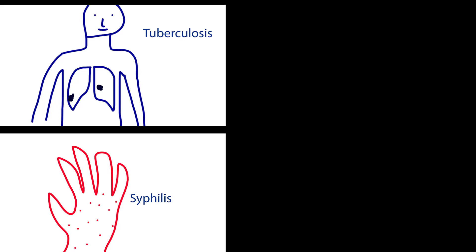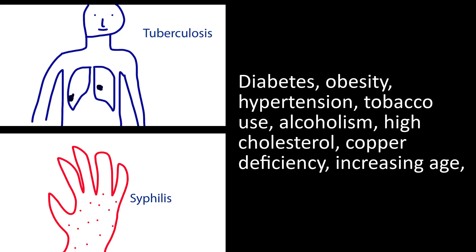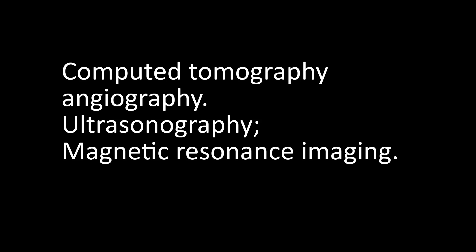Renal aneurysm symptoms include flank pain, tenderness, hypertension, hematuria, and signs of hypovolemic shock. Risk factors include infections such as syphilis and tuberculosis, chronic diseases, diabetes, obesity, hypertension, tobacco use, alcoholism, high cholesterol, copper deficiency, increasing age, and genetic factors such as berry aneurysm. For diagnostic purposes, computed tomography, angiography, ultrasonography, and magnetic resonance imaging are used.